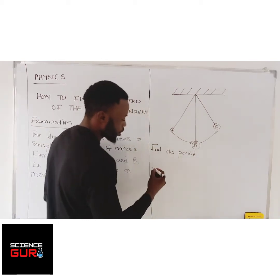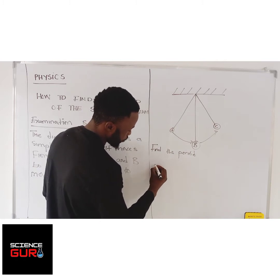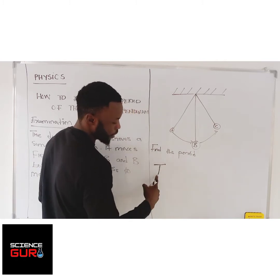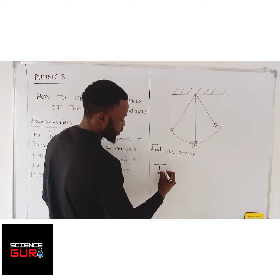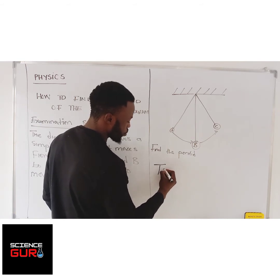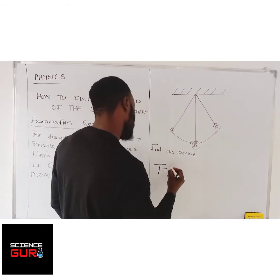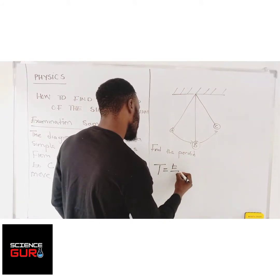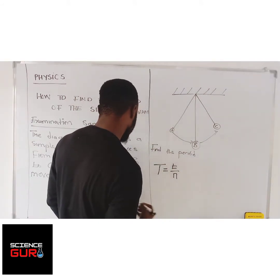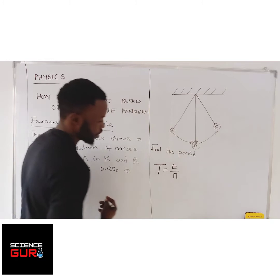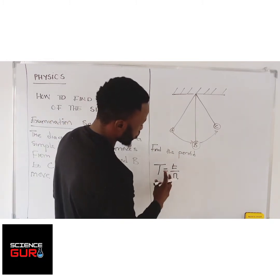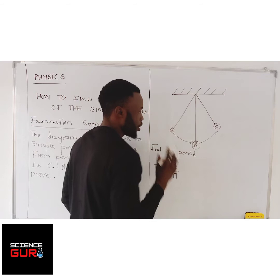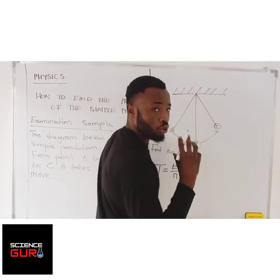So you write that the period, given by the letter T, is equal to time over the number of oscillations. Do you get that? It equals time over the number of oscillations.